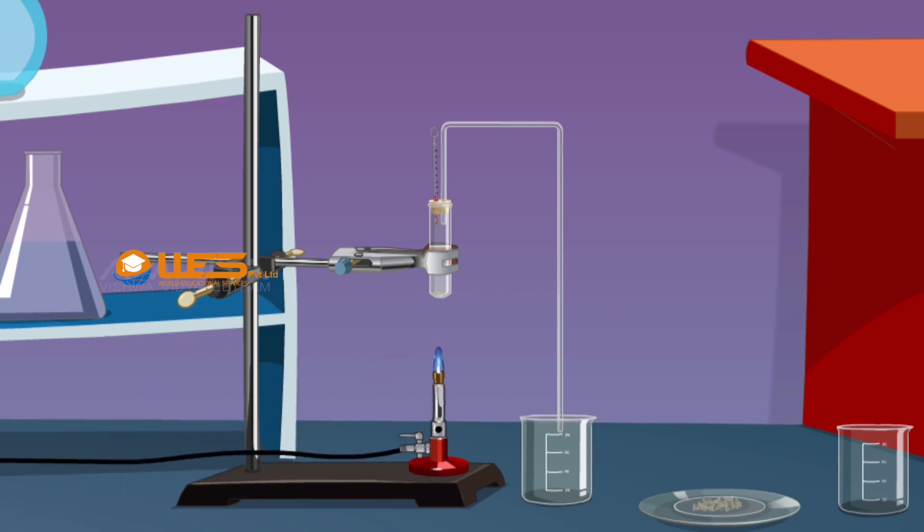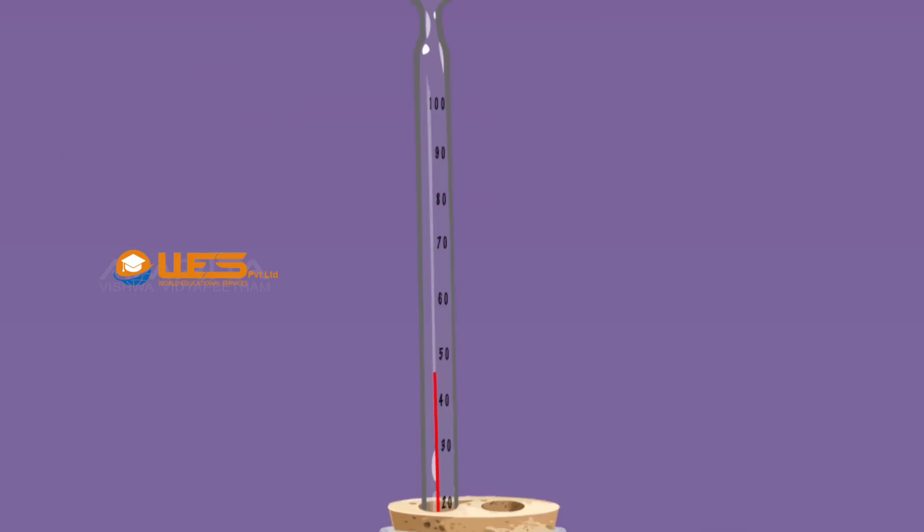Take a Bunsen burner and heat the boiling tube gently by rotating the flame. Note the temperature T1 when the boiling of water starts.